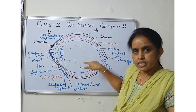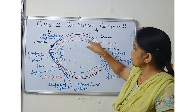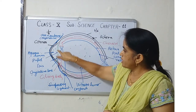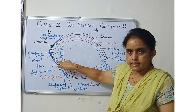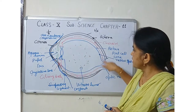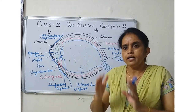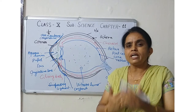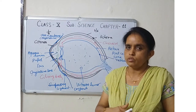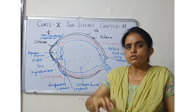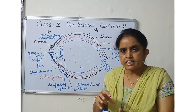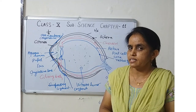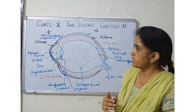The vascular layer has three parts: choroid, ciliary body, and iris. The innermost layer is called the retina. The retina has two types of cells: rod cells and cone cells. Rod cells are sensitive to light, and cone cells are sensitive to color. The sclera is opaque.